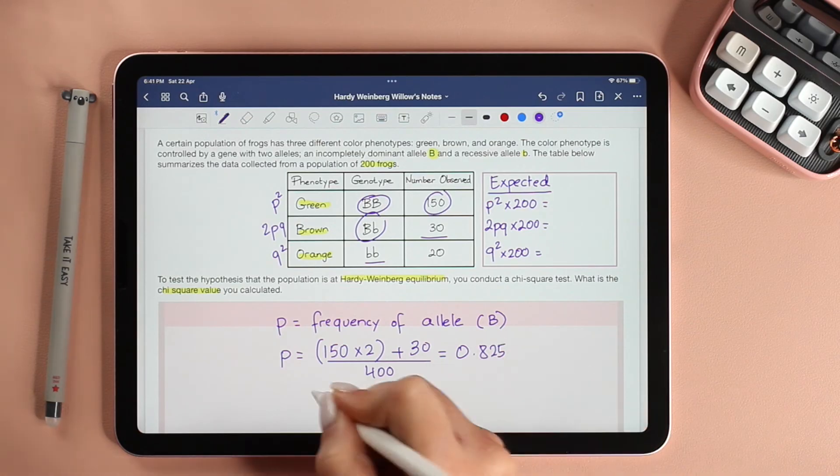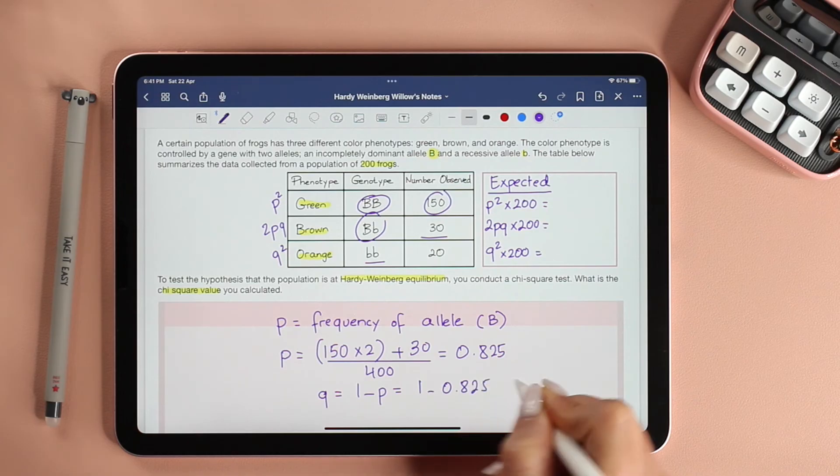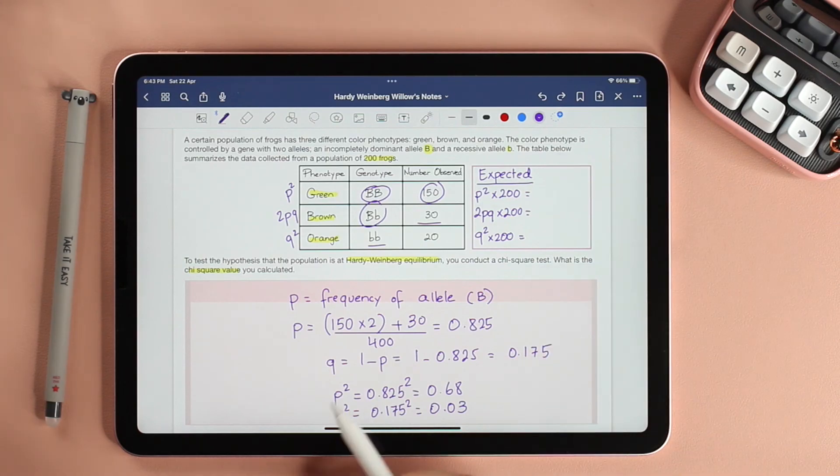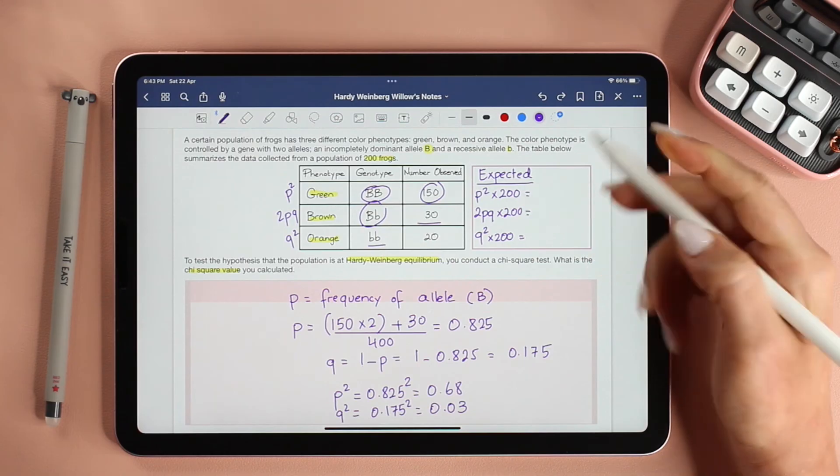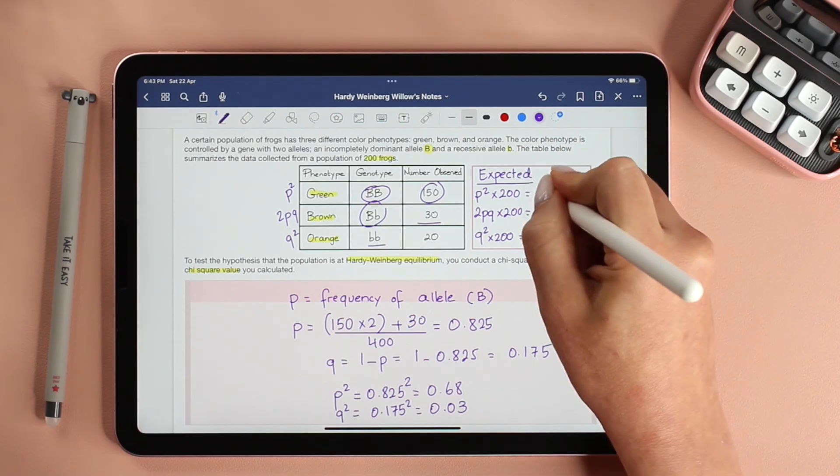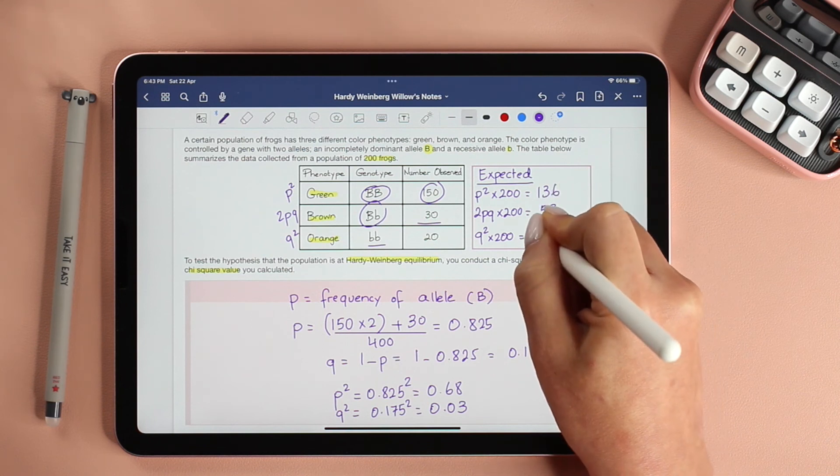And this will give us a value of 0.825. Once we have p, it's easy to find q. q is 1 minus p, so 1 minus 0.825, which gives us 0.175. At this point, I'm just copying the numbers. I found p², q², and if we multiply them by 200, we're going to get a value of 136, 58, and 6.